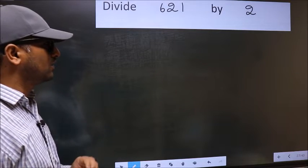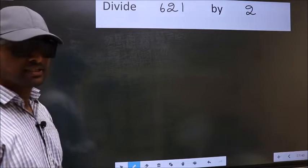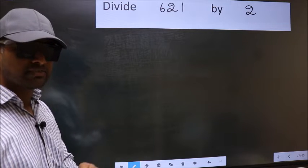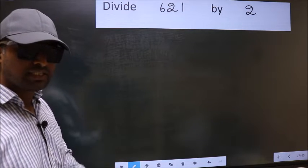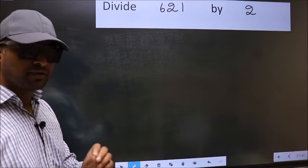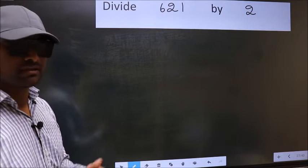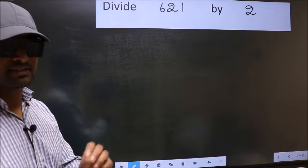Divide 621 by 2. While doing this division, many do this mistake. What is the mistake that they do? I will let you know. But before that, we should frame it in this way.